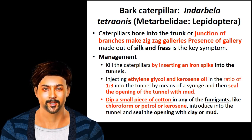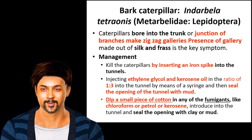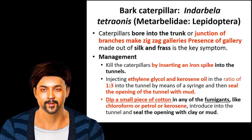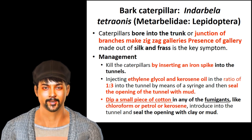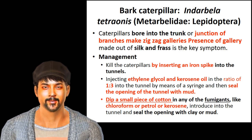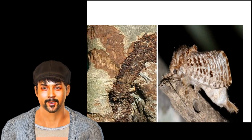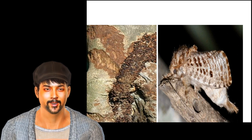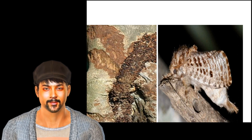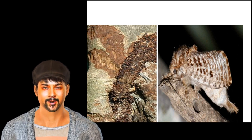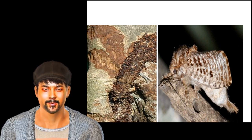Caterpillars bore into the trunk and the junction of branches, making a zigzag gallery. The presence of a gallery made up of silk and frass is the key symptom of bark caterpillar. For management, kill the caterpillar by inserting an iron rod into the tunnel. Also inject ethylene glycol and kerosene oil in the ratio of 1:3 into the tunnel by means of a syringe, then seal the opening with clear mud.